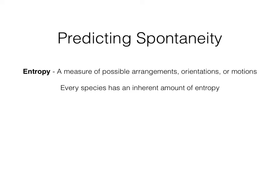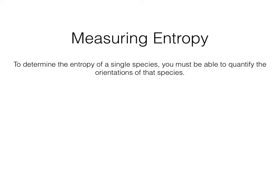Every species has an inherent amount of entropy. And measuring entropy gets tricky. To determine the entropy of a single species, you must be able to quantify the orientations of that species.